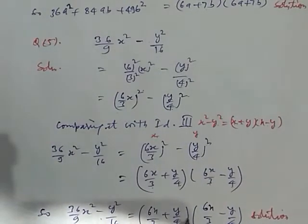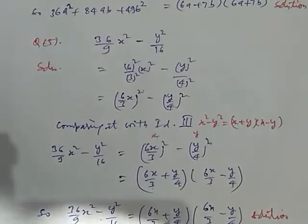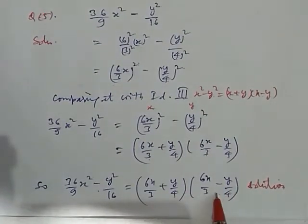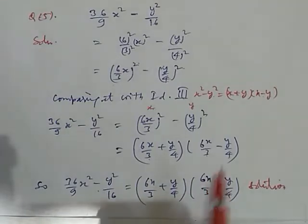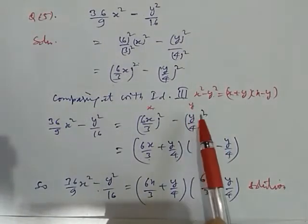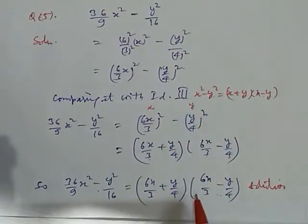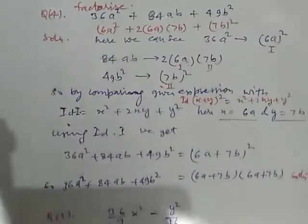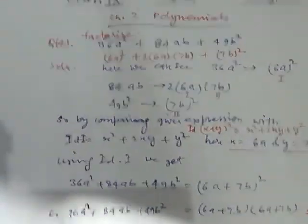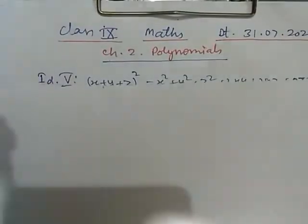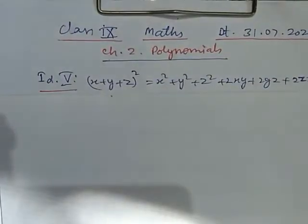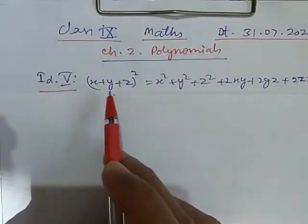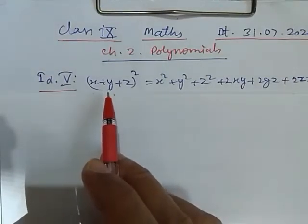So, by using identity, it is very easy to factorize any polynomial. So, remember different identities and practice to convert this. Now we take other identities. In last session, we took four identities.